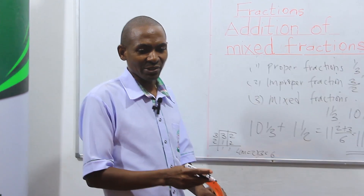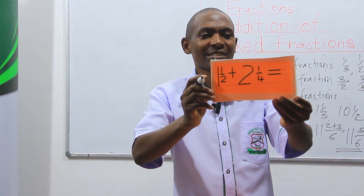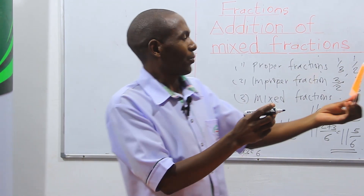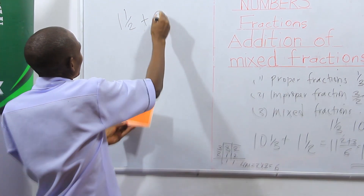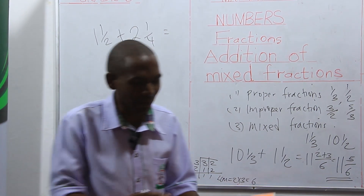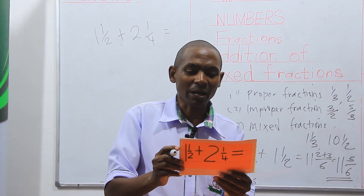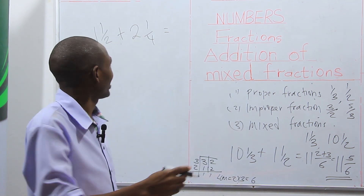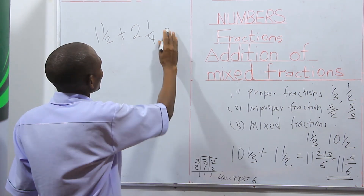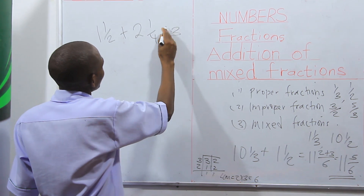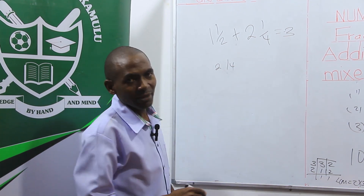We also have the second example: one and a half plus two and a quarter. I have given you a simple equation and you are able to work it out. So again, we come and add the whole numbers — what is one plus two? We are supposed to get three. Then after that, we come and find the LCM of two and four.